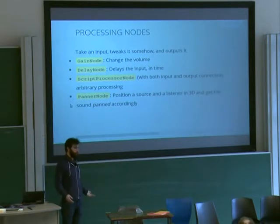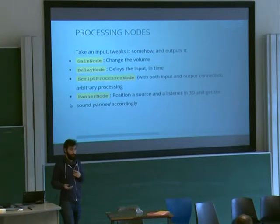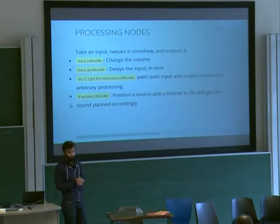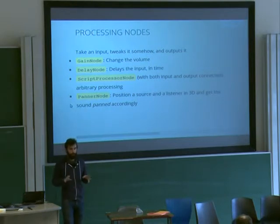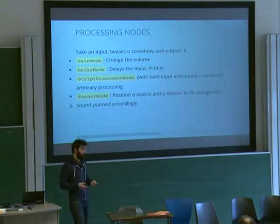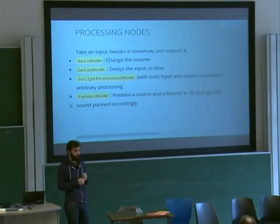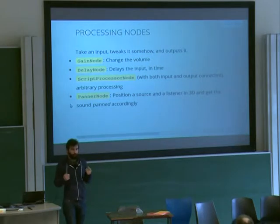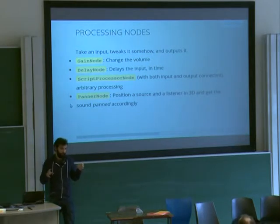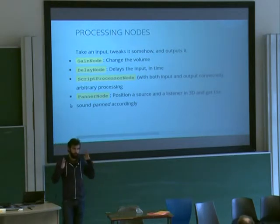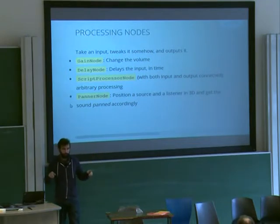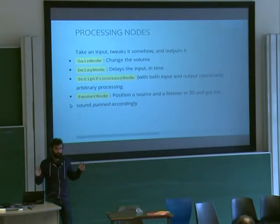Processing nodes: the simplest is a gain node — a gain of 0.5 is half the volume; you can set it above 1 to boost. A delay node delays the input in time — a one-second delay waits one second then outputs the sound, extremely useful. The ScriptProcessorNode lets you write arbitrary JavaScript to process data — it's broken per spec, not an implementation problem. The PannerNode is extremely useful for games: set two or three points and the sound speed, and the sound gets panned in your speakers or headphones relative to the positions of those points, and if they're moving you get Doppler effect for free.